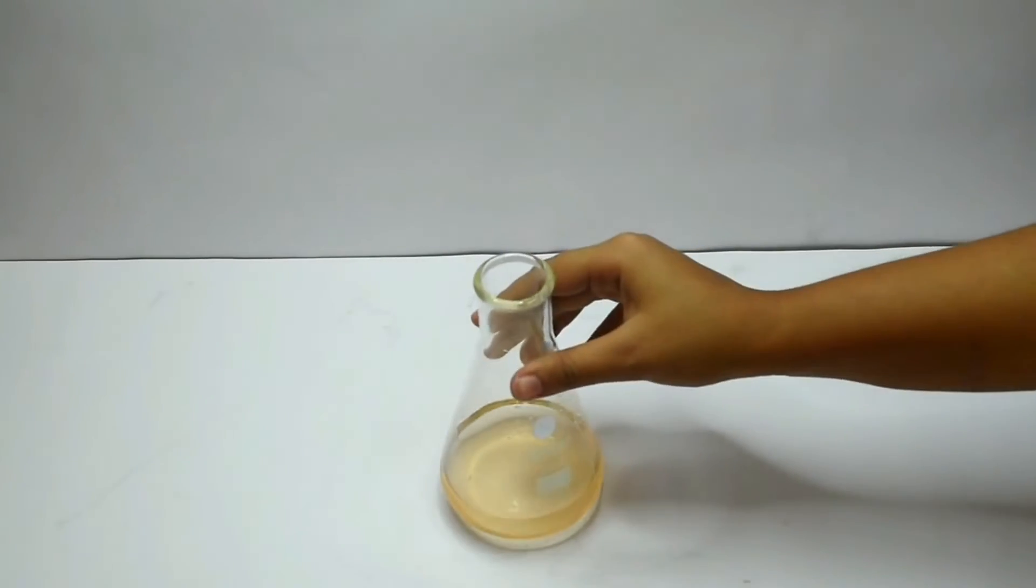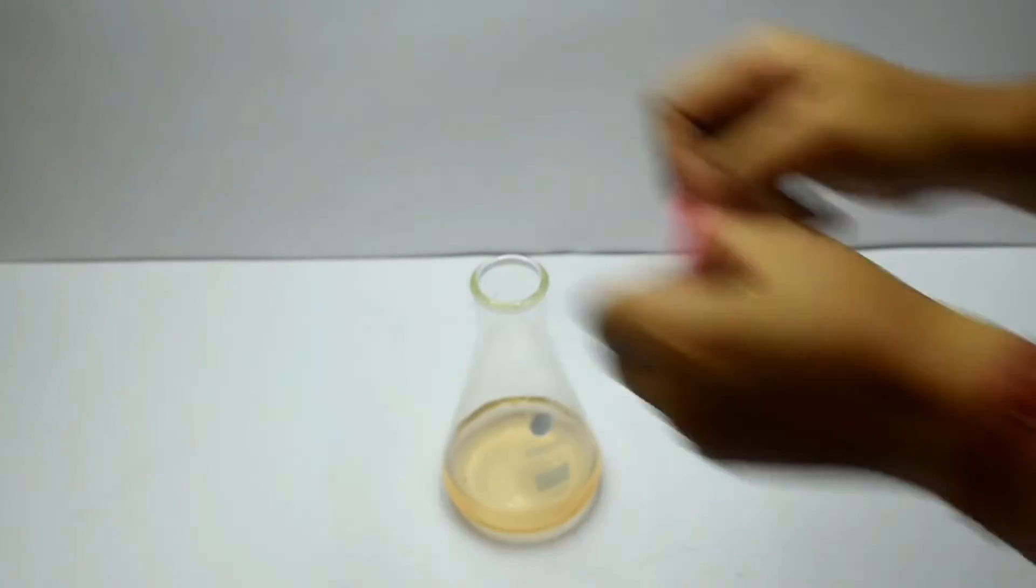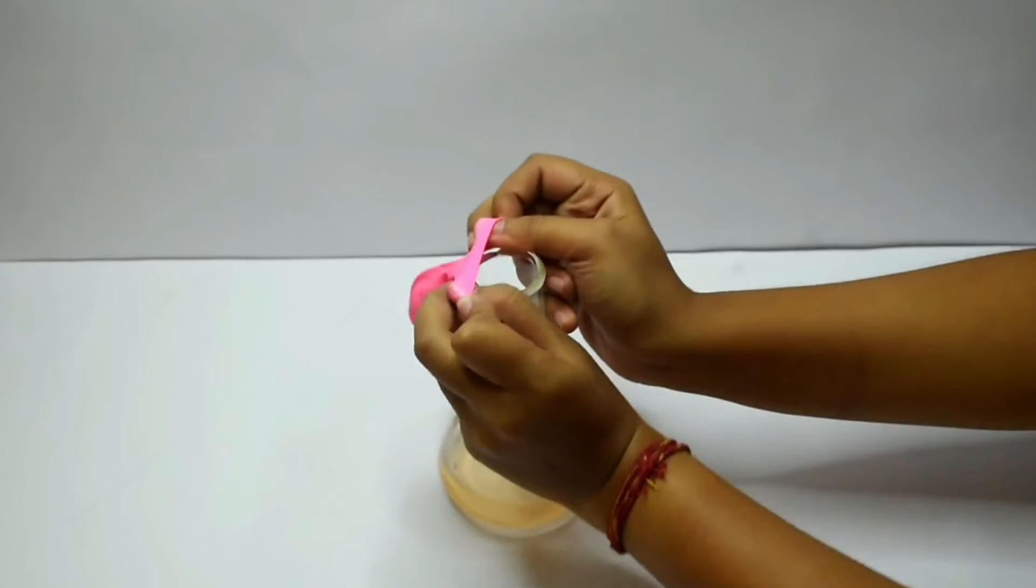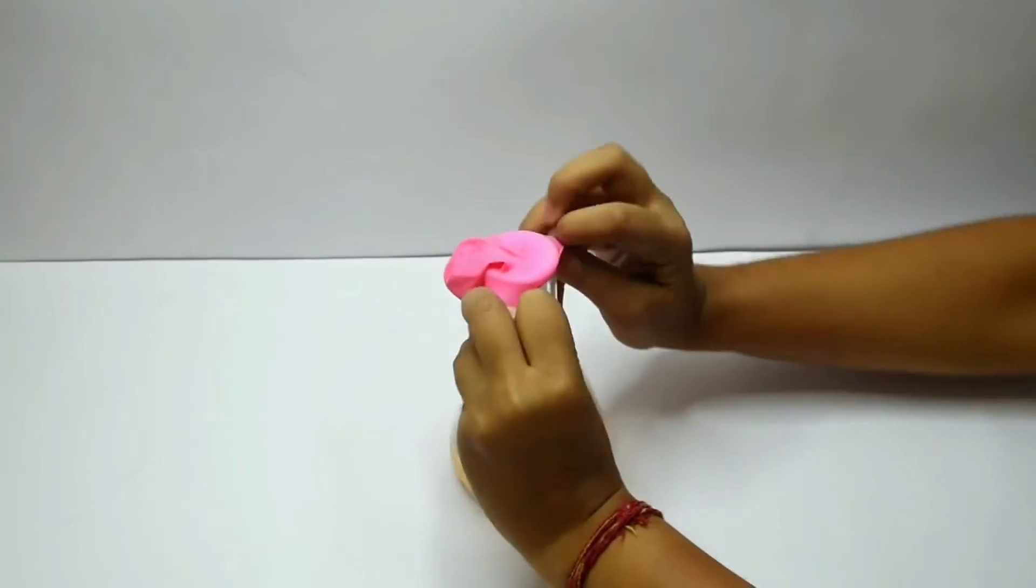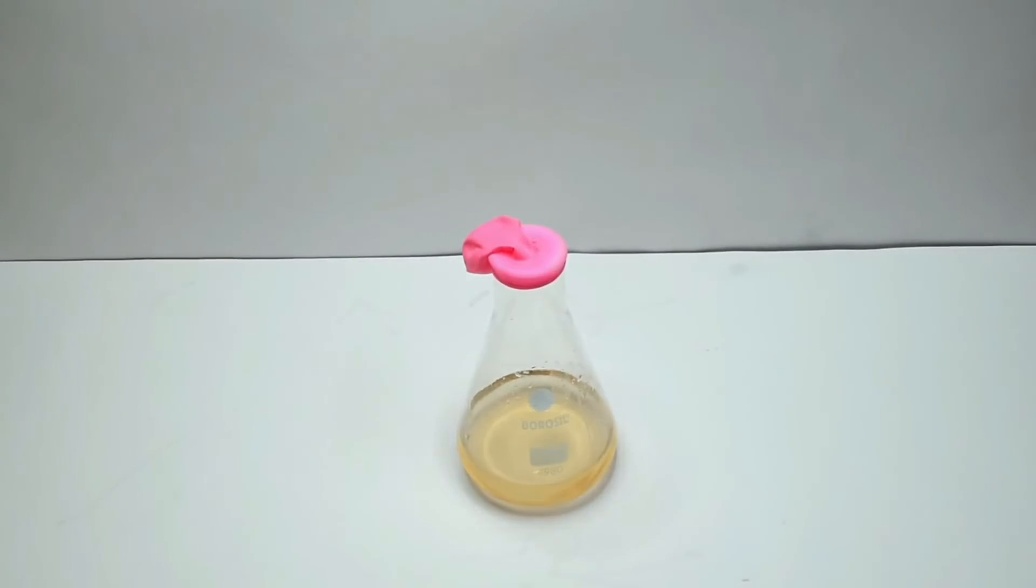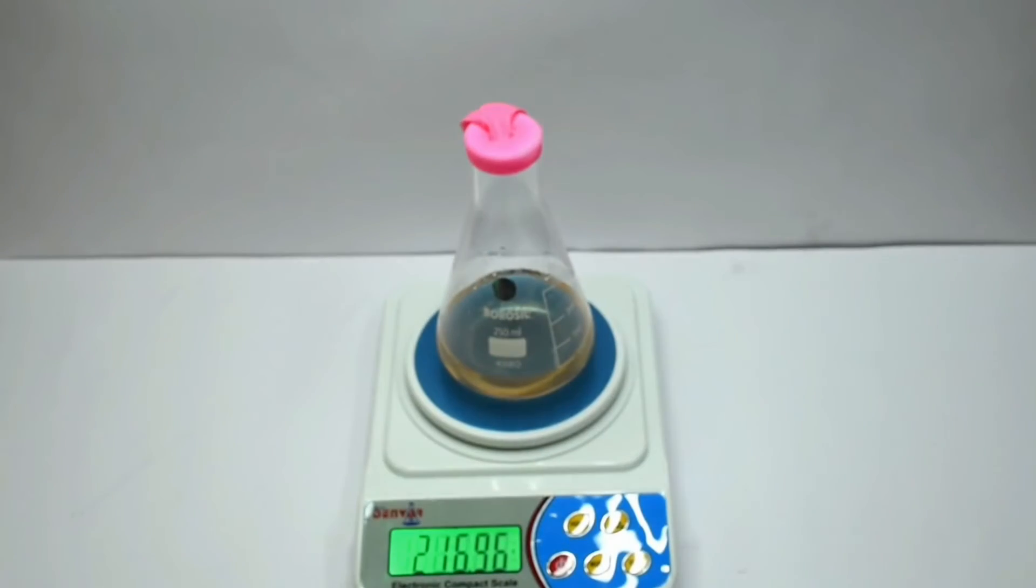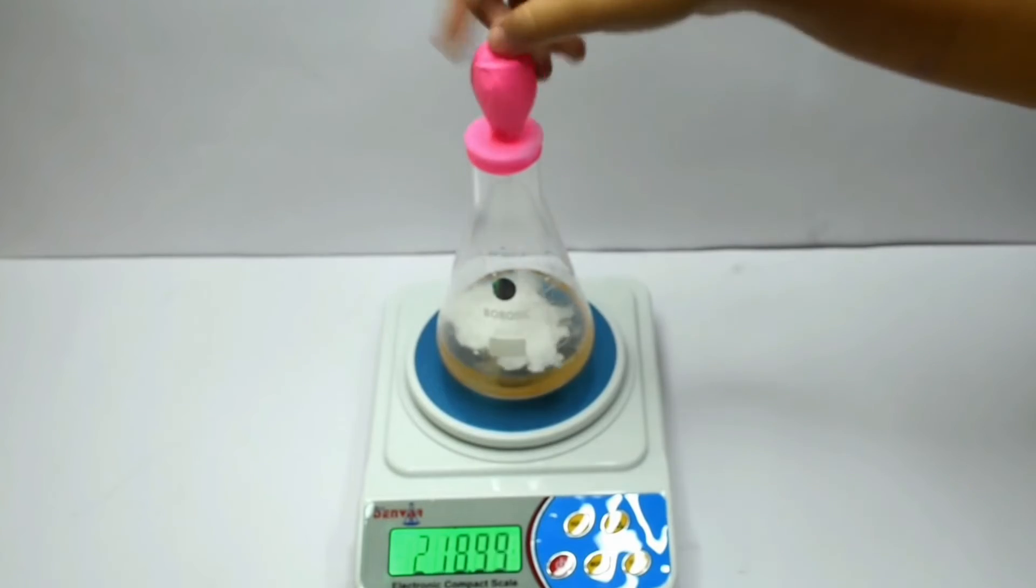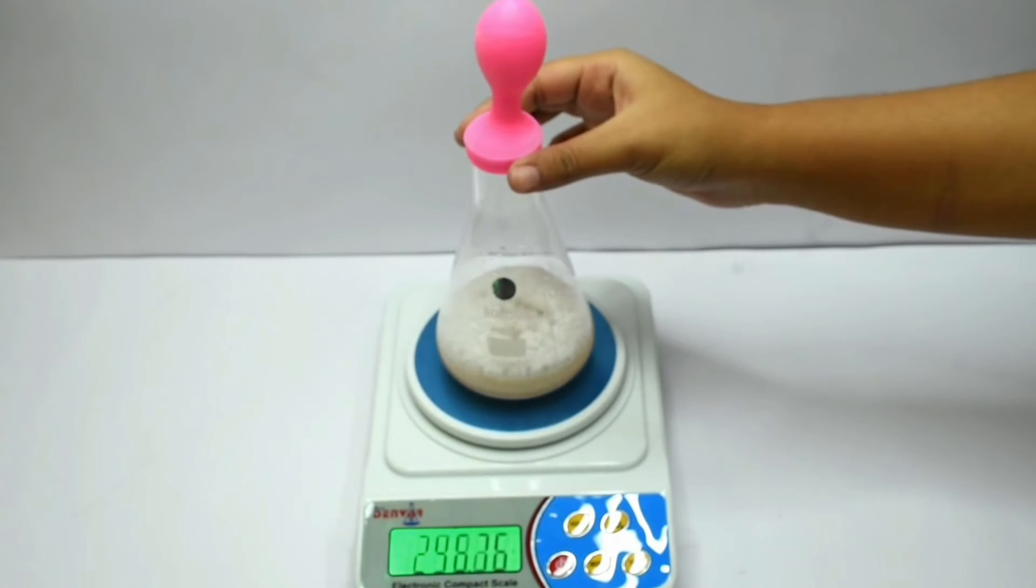For the next step, let us bring back the conical flask with vinegar in it and nicely fit the balloon with baking soda on its mouth. Make sure that the contents do not mix yet. The setup is placed on top of the digital weight machine and the contents of the balloon is carefully allowed to mix with the vinegar.